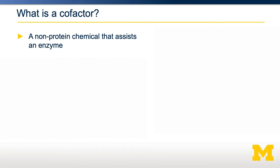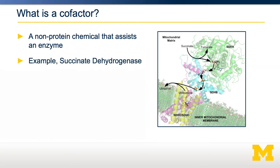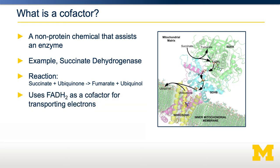A cofactor is a non-protein chemical that helps with the catalysis of a particular enzyme. That means for a reaction to occur, you have to have not only the substrates available, but you also need to have the cofactor available to help facilitate that reaction. Here's an example: succinate dehydrogenase catalyzes the reaction where succinate is converted into fumarate, while ubiquinone is converted into ubiquinol. An electron has to be transported from succinate onto ubiquinone, and this requires an electron carrier molecule called FAD, which serves as a cofactor. If you are limiting in FAD, you're not going to be able to effectively convert succinate into fumarate.